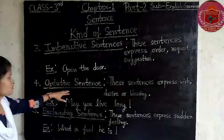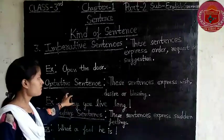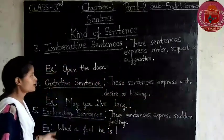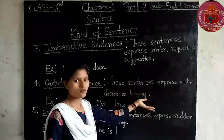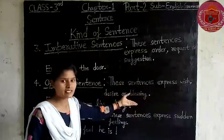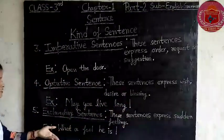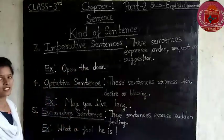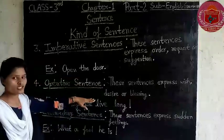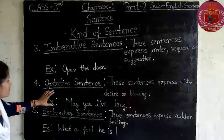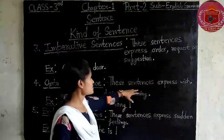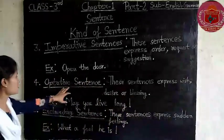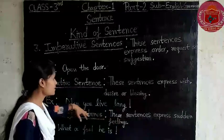Now next one is the optative sentence, that is Icchha Sunchab Bhakti. This sentence expresses a wish, desire, and blessing. The example of an optative sentence is here: 'May you live long.'